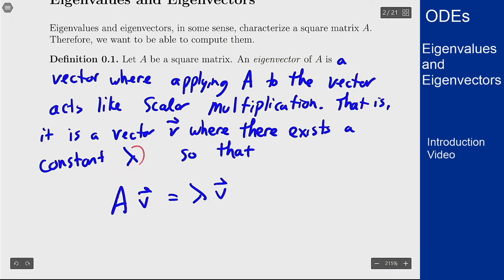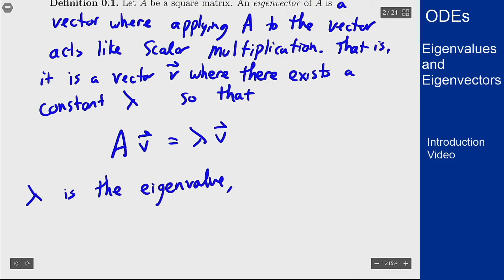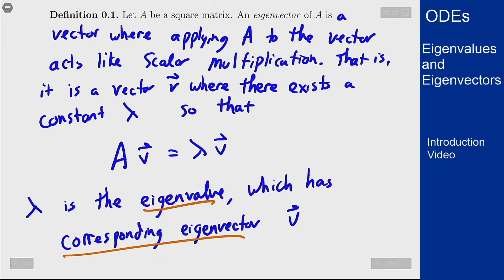And lambda is the traditional letter used for these numbers which are called eigenvalues. In this case lambda is the eigenvalue and it has corresponding eigenvector v. You can talk about the vector corresponding to the value or vice versa, but they correspond to each other.